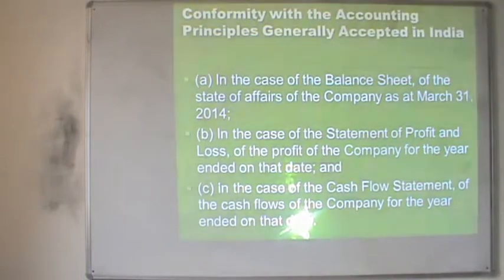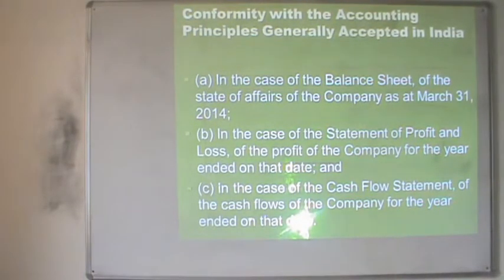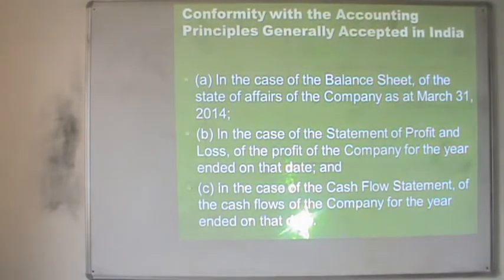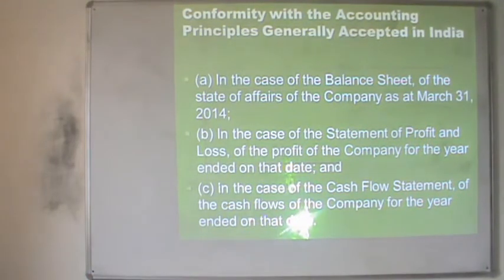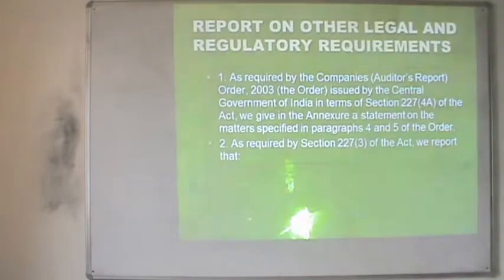The three financial statements given by the company are the balance sheet, the profit and loss statement, and the cash flow statement. The auditor's report provides details that these have been prepared in the proper way by the company.